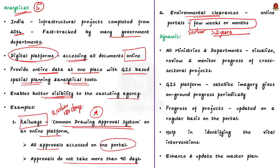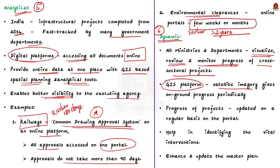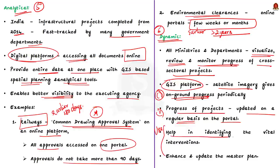The sixth pillar is dynamic. All ministries and departments will now be able to visualize, review, and monitor the progress of cross-sectoral projects through the GIS platform. Satellite imagery will give on-ground progress periodically and project progress will be updated regularly on the portal. This helps in identifying vital interventions for enhancing and updating the master plan in real time.